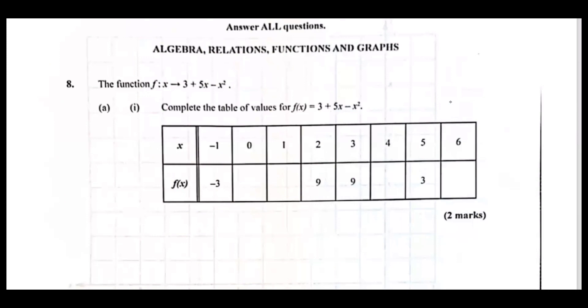You complete the table of values by substituting the x values in the function to find f(x) values, because look, the table shows x and f(x). So if I complete the values, that's the way it is.